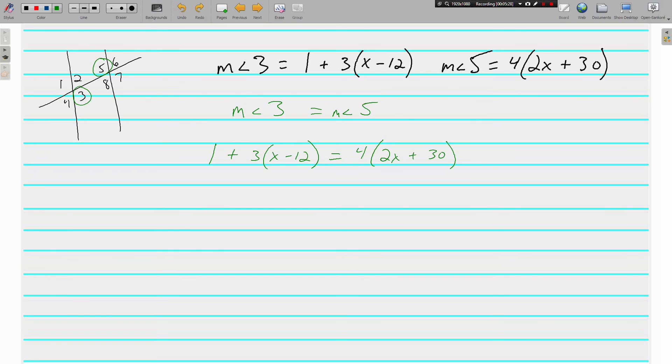We're going to simplify each side before we do anything to both sides. So on the left, we've got 1 plus 3 times x is 3x. And 3 times negative 12 is negative 36. And 1 combined with negative 36 gives us 3x minus 35.